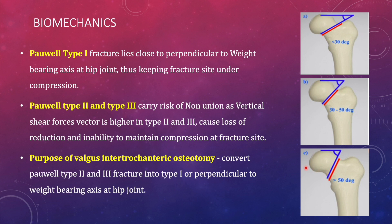The purpose of valgus osteotomy is to realign Pauwel's type 2 and 3 fractures to a type 1 pattern. In Pauwel's type 1, the weight-bearing axis is nearly perpendicular to the fracture, so any force from weight bearing acts perpendicular to the fracture, resulting in good compression at the fracture site and ultimately union. The purpose is to realign the fracture in line with the weight-bearing axis of the proximal femur.